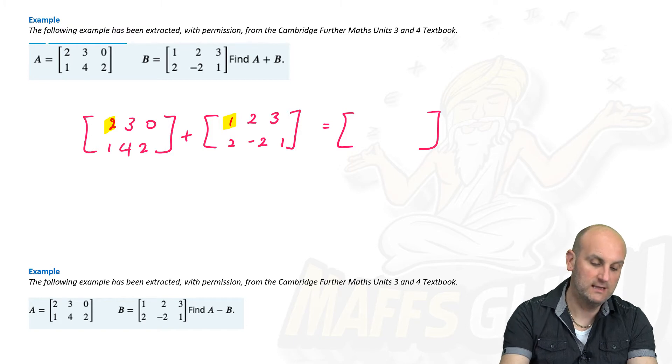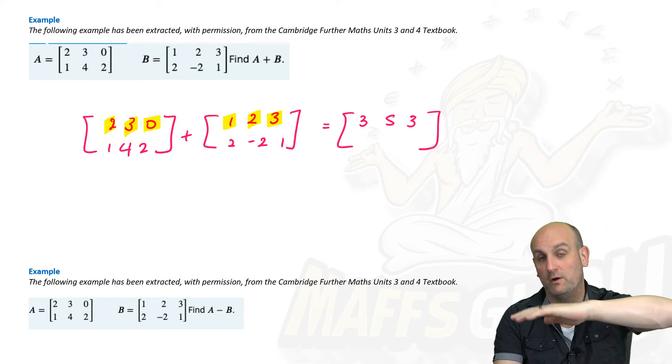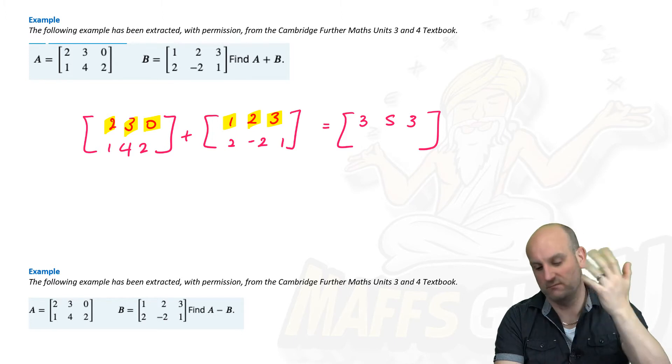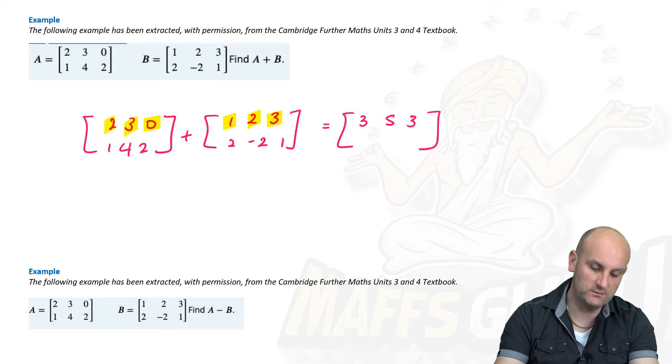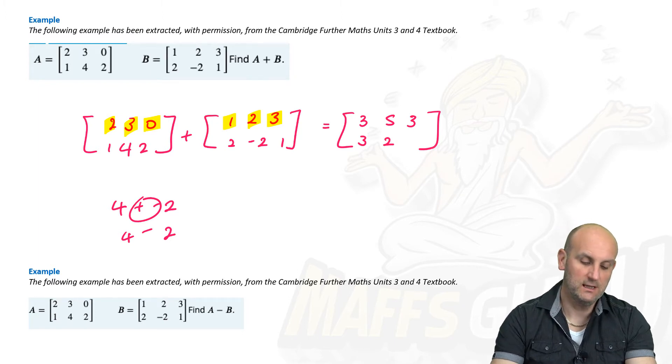So, I'm going to write this out as 2 3 0 1 4 2. And I'm going to add that to 1, 2, 3, 2 minus 2, 1. Now, I'm not going to keep highlighting them. I'll do a few of them, but just remember, elements and elements. This element and that element match, add them together, gives me 3. We move across that element and that element. 3 plus 2 gives me 5. And then finally, 0 plus 3 gives me 3.